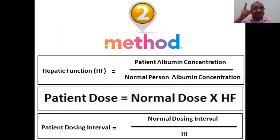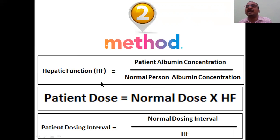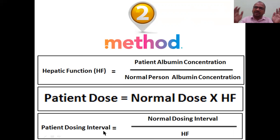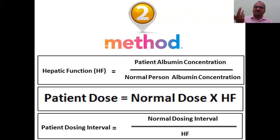Method 2 uses a calculation similar to renal function adjustment. Hepatic function = patient albumin concentration divided by normal person albumin concentration. Patient dose = normal dose × hepatic function. You can either adjust the dose while keeping the dosing interval constant, or increase the dosing interval while keeping the dose the same — two options, just like in renal function.